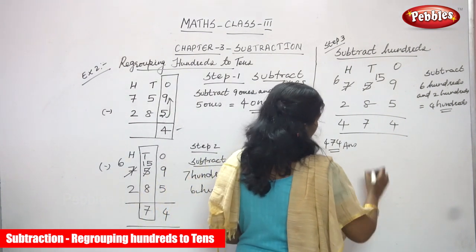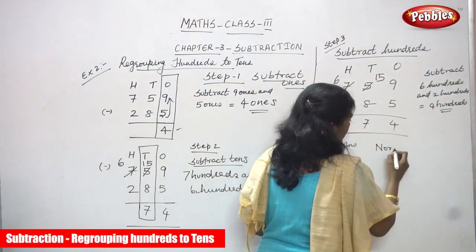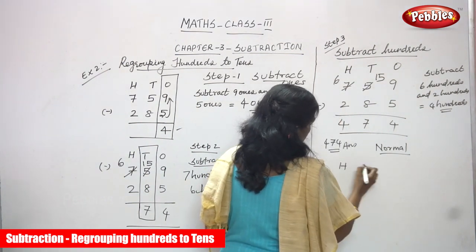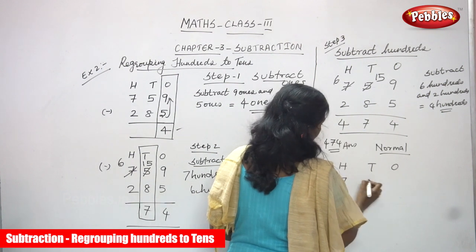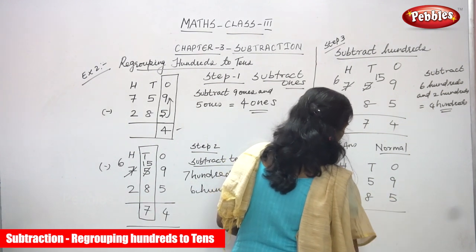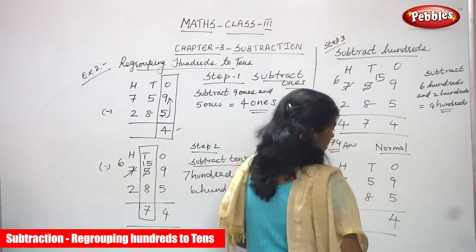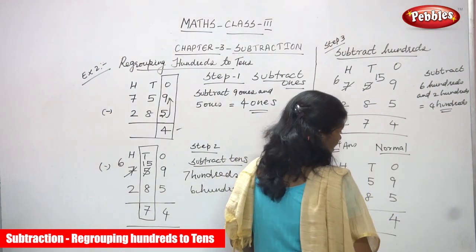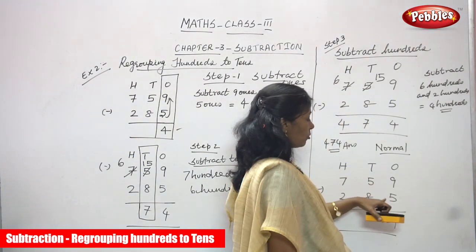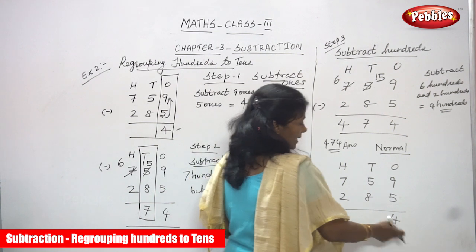Now I am going to do the normal method — a traditional, very normal subtraction. Columns are H, T, and O: 7, 5, 9 minus 2, 8, 5 — without regrouping shown separately. Nine minus five: nine is the greater number, five is the smaller. After five count six, seven, eight, nine — the answer is four. Write four in the ones place.